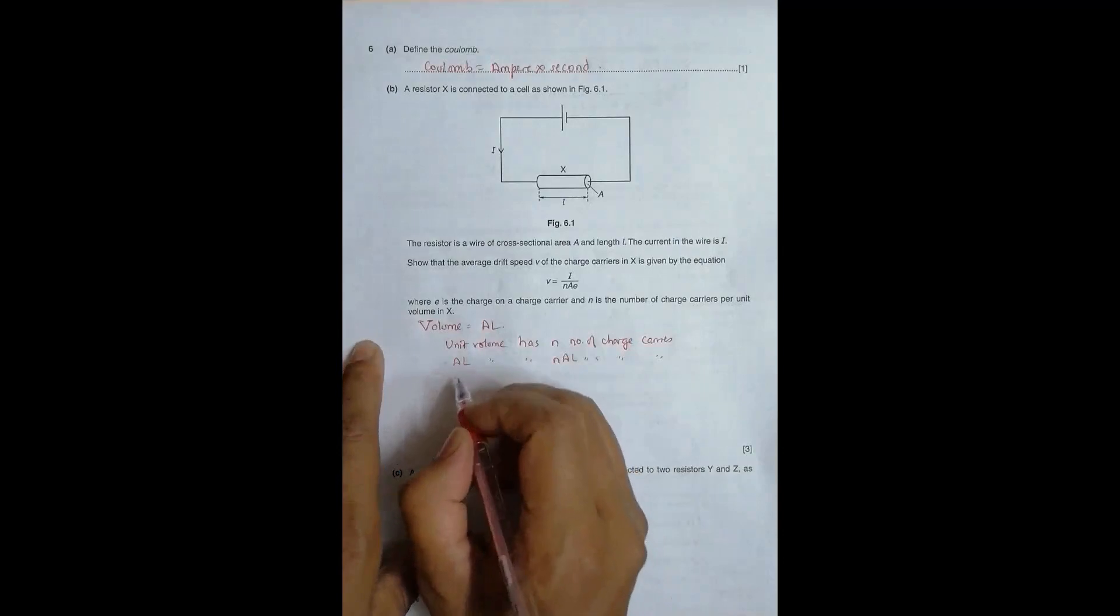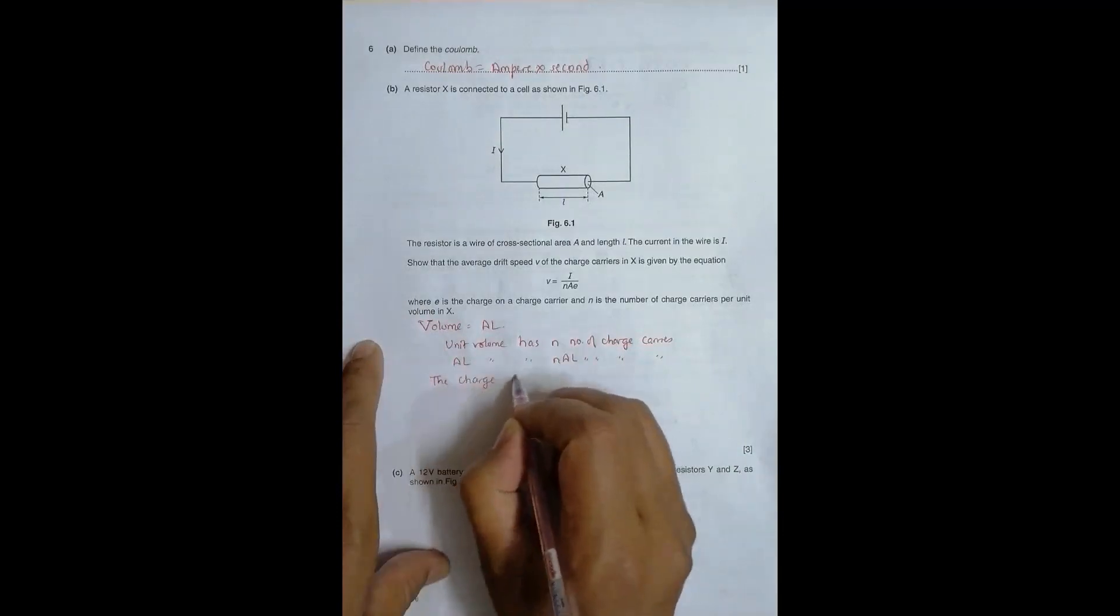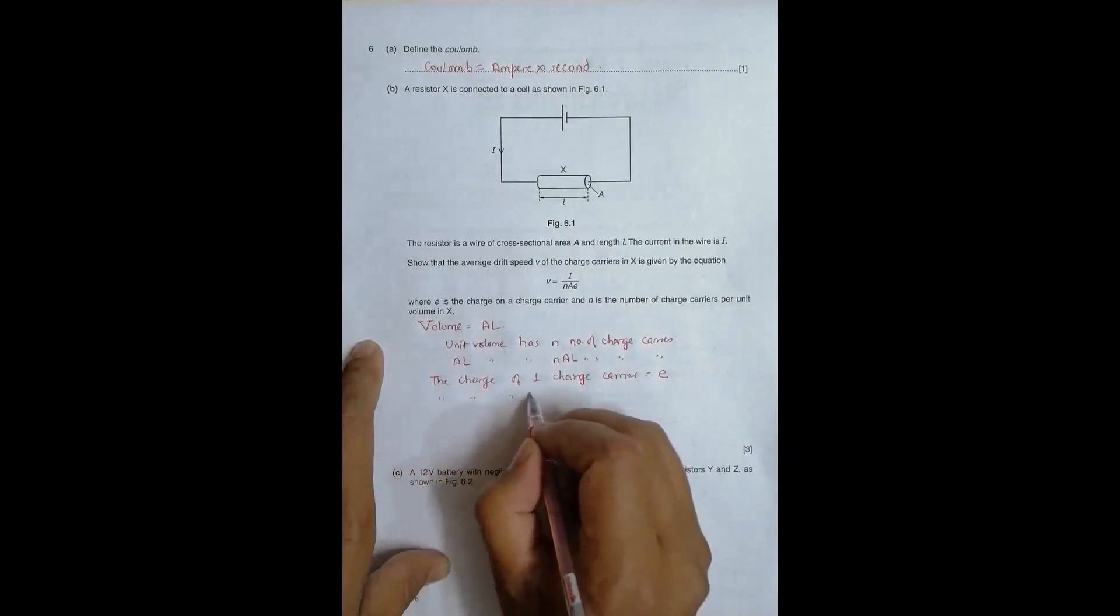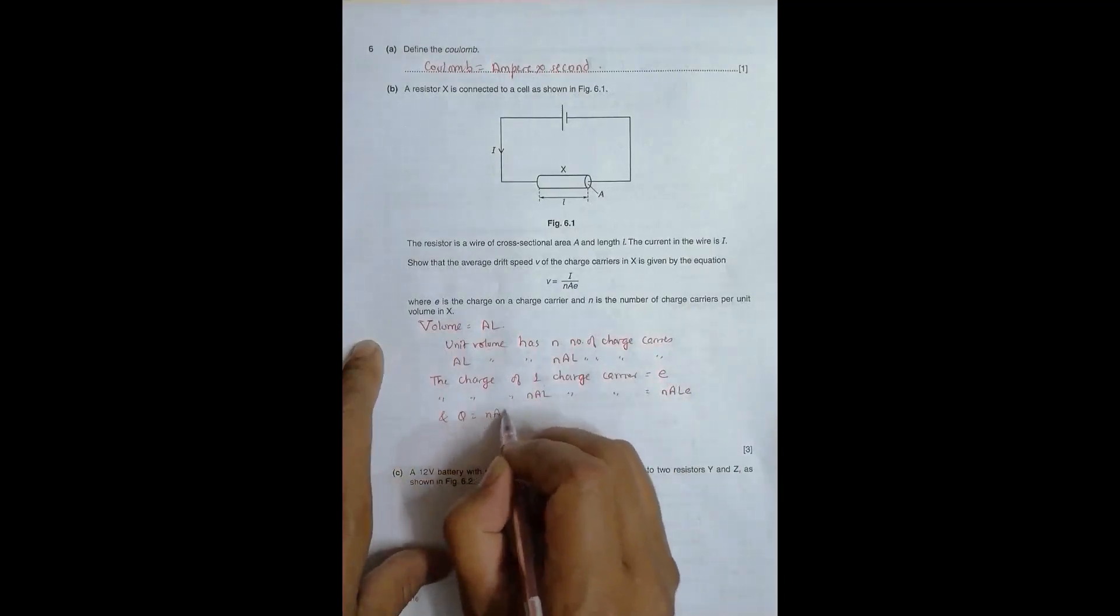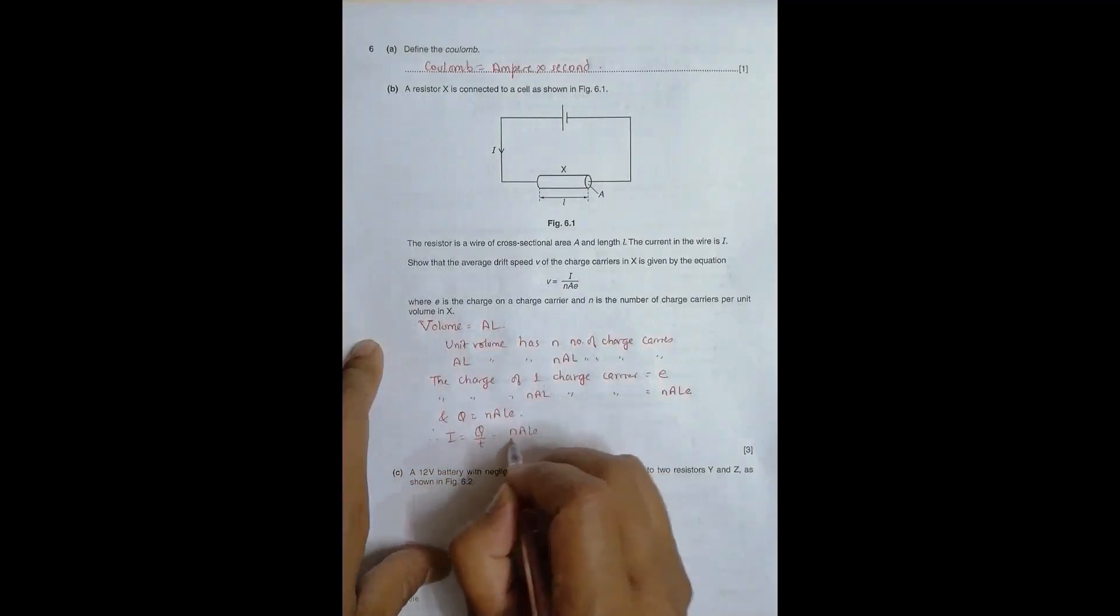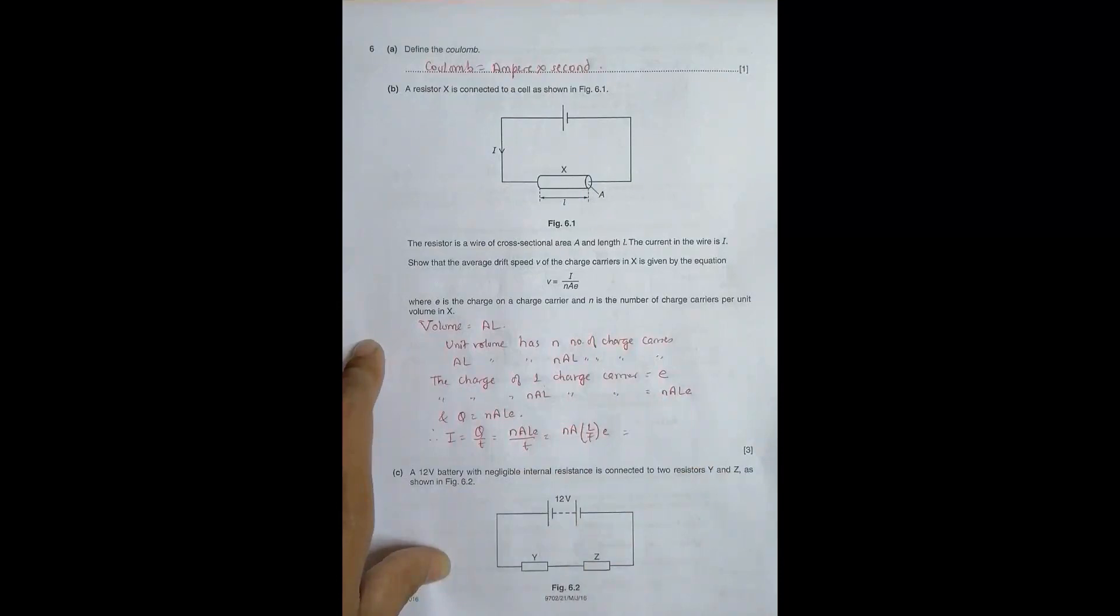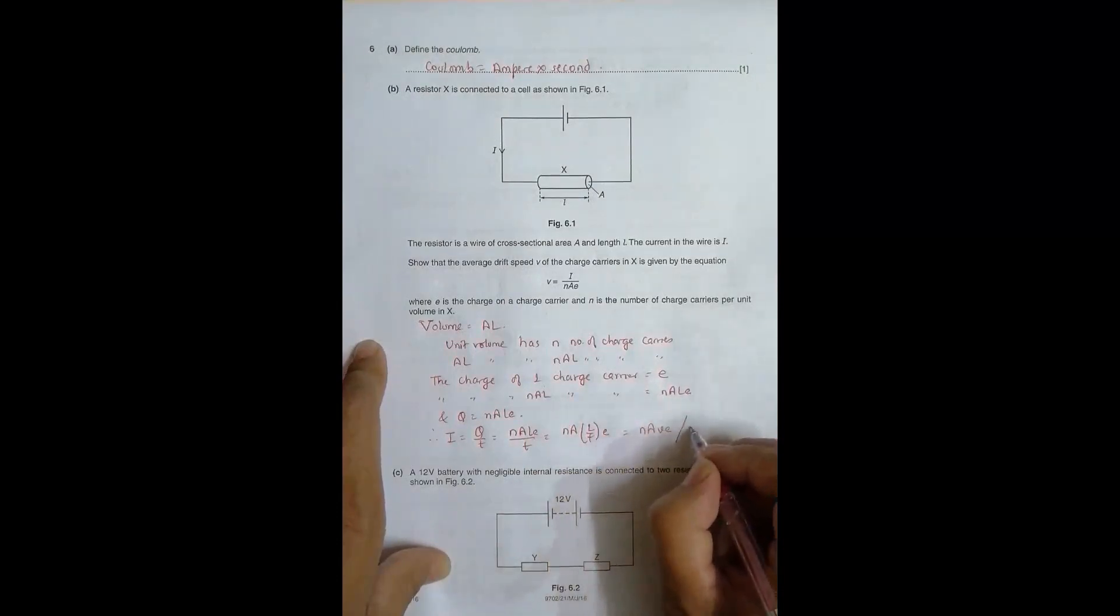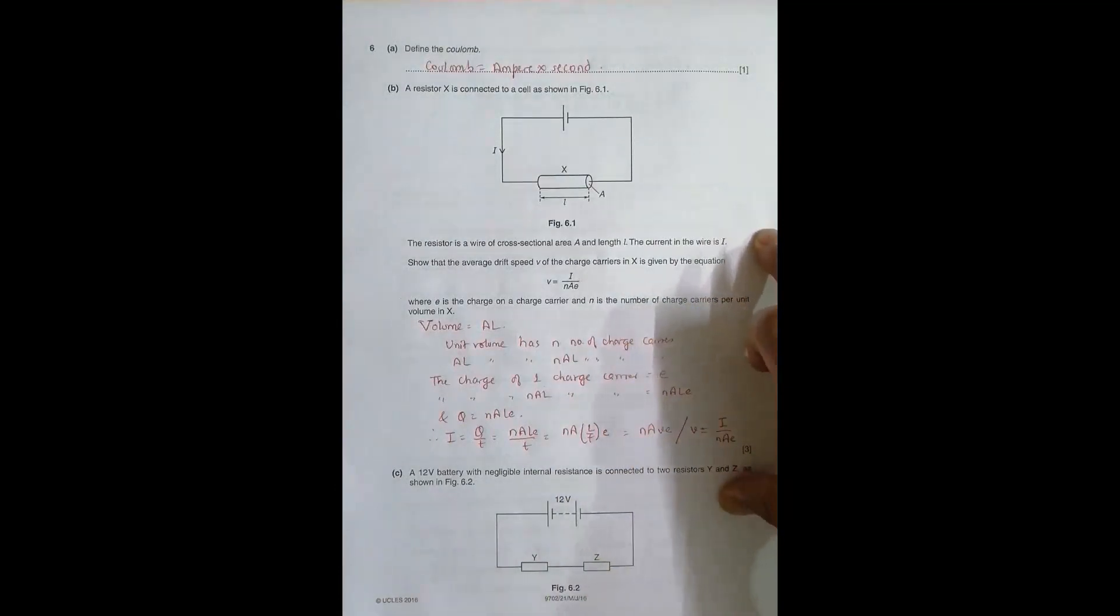So the charge of one charge carrier is equal to E. So the charge of N, A, L charge carriers is equal to N, A, L, E, and that's equal to the value of charge. Therefore current is equal to Q by T equal to N, A, L, E by T equal to N, A, L by T into E. So this L by T gives us the length of the conductor traveled in a time, so it gives the average drift speed. So it is N, A, V, E, which then gives us V equal to I by N, A, E. So pretty long process actually. I try to deal with the whole process in full details.